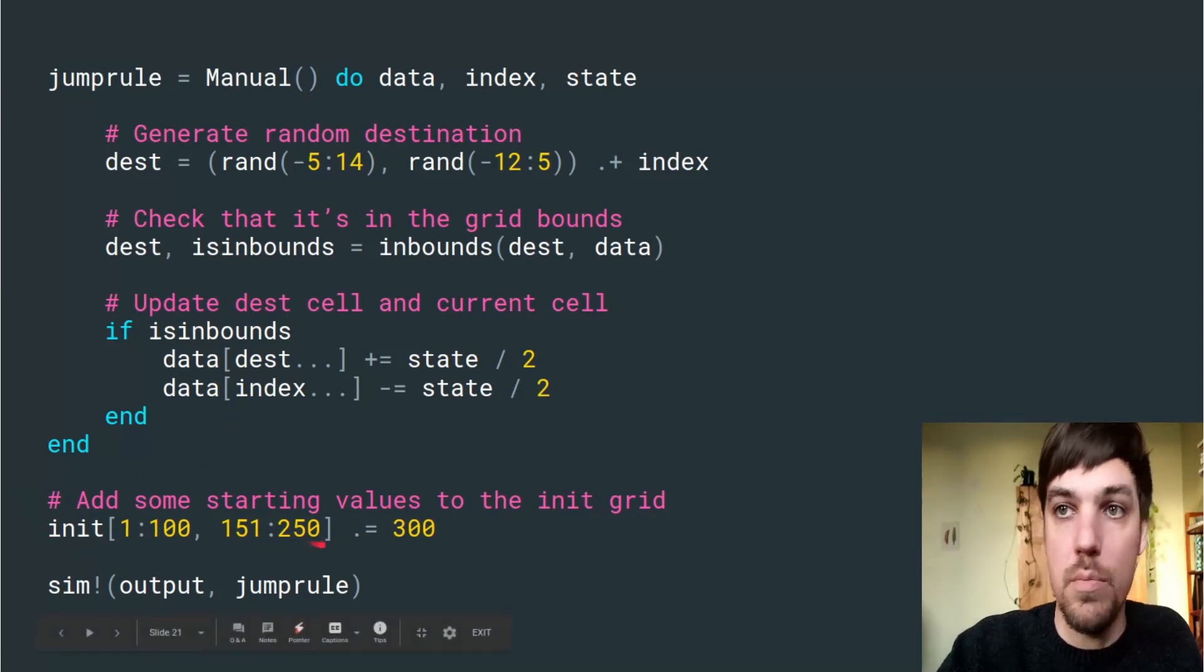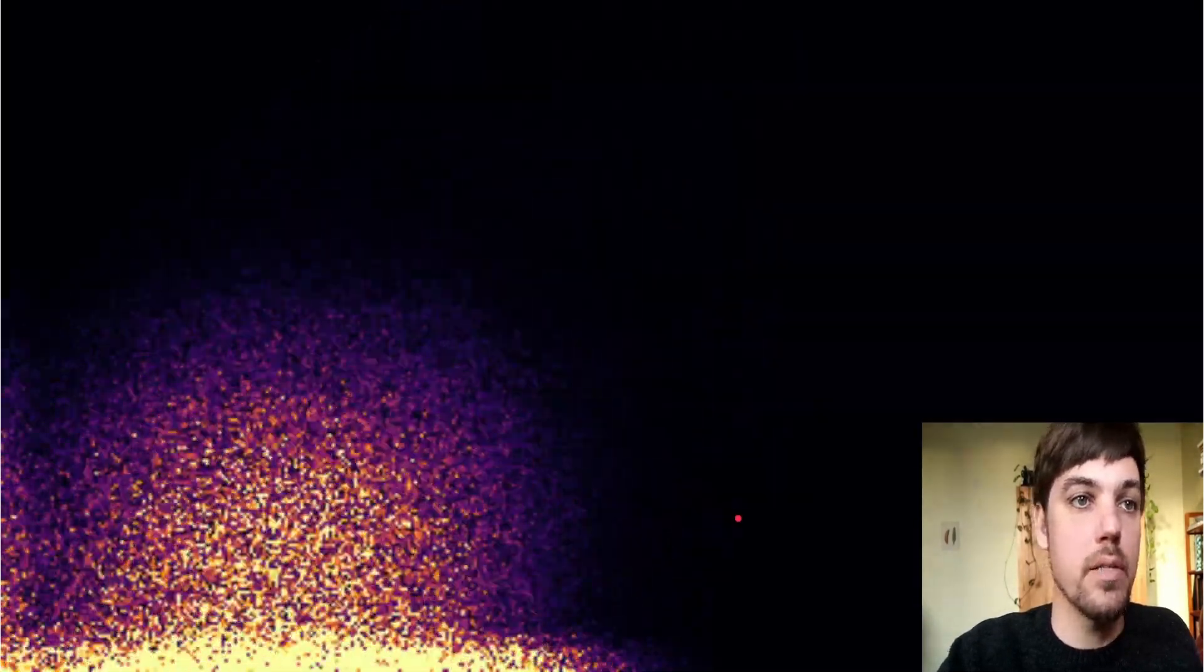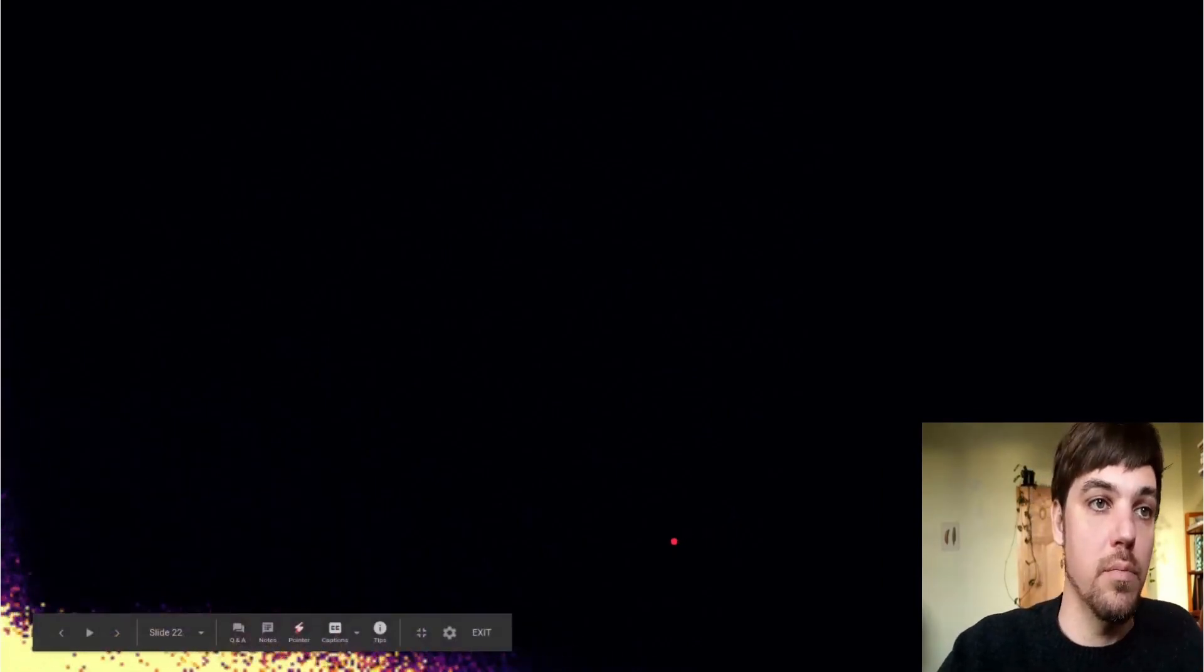We can then initialize some cells on the grid with values, so there's something to look at and run the rule. For that rule, we get something like this. You can see that skew in where the cells are moving.